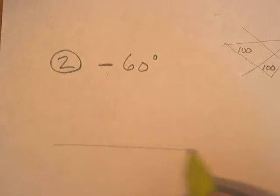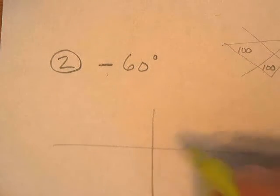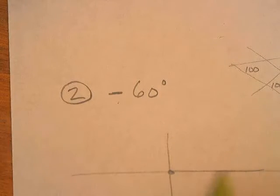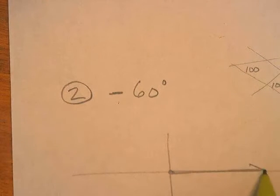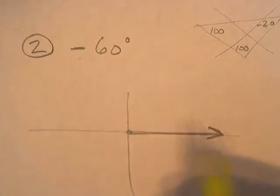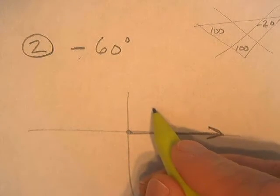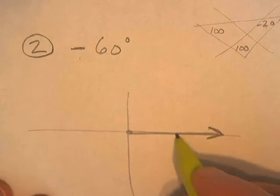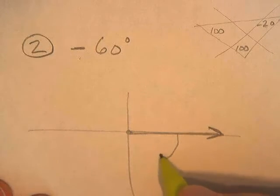So to draw this one, if the angle is negative, never fear. There's your initial side right there. But on positive angles, we go up. We go counterclockwise. But on negatives, we just go the other way.